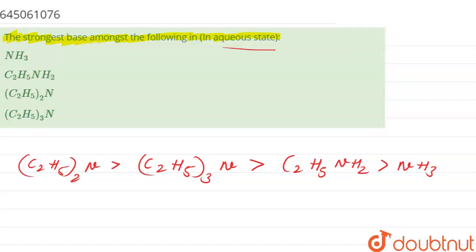So if we talk about the strongest base, the strongest base should be (C2H5)2N. This is a secondary amine, right?